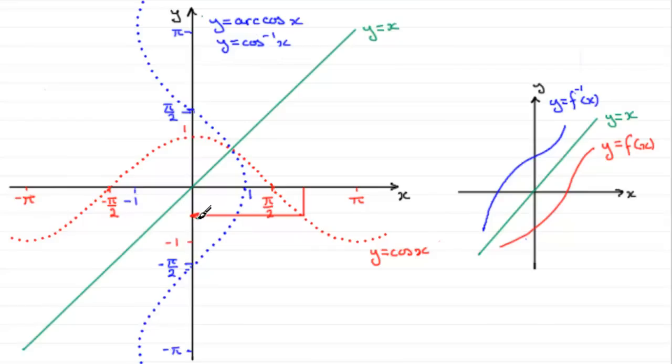But I want the inverse cos of x to be also a function and it's not at the moment because if I take any value in the domain, remember the domain goes from minus 1 to 1. So let's say I take a point like this one.